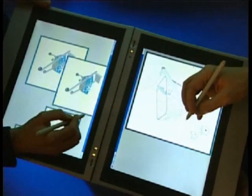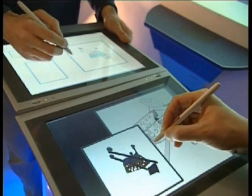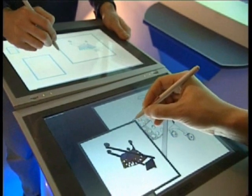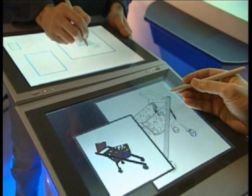The coupling of the individual displays resulting in a common shared workspace is achieved by simply moving the ConnecTables together. Information objects can be shared by simply moving them to the other side, regardless of the physical border.